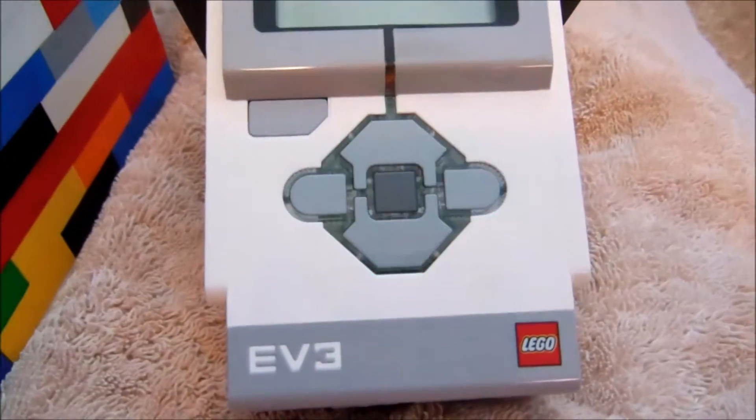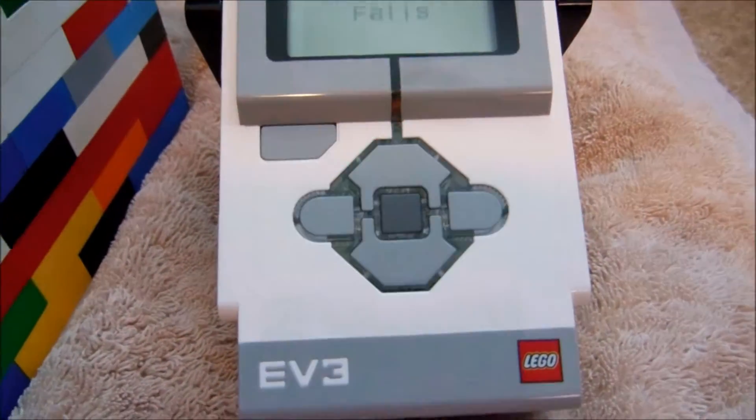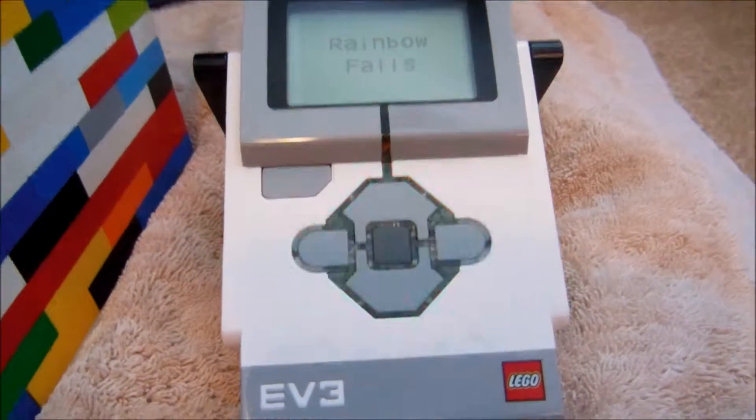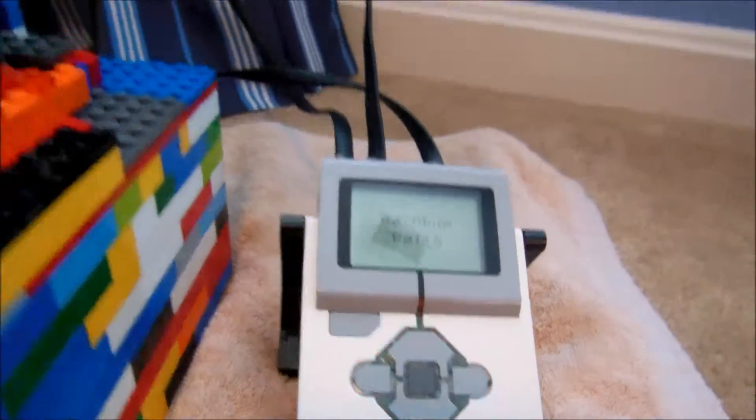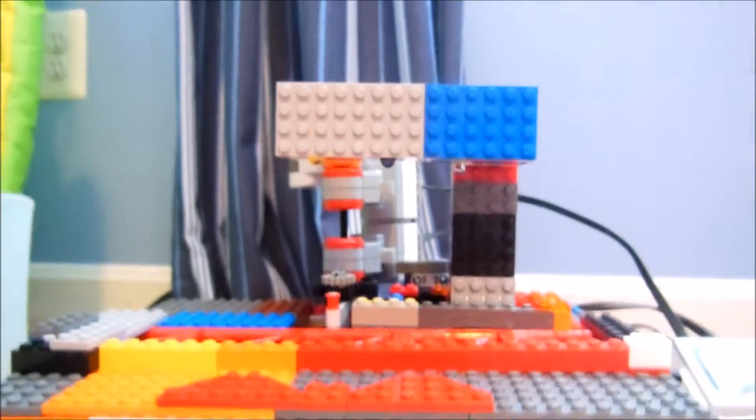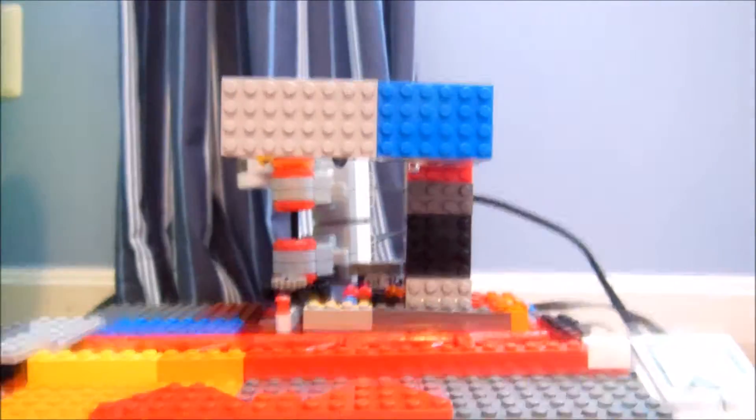It says Rainbow Falls on the screen and the red light is flashing. To turn it on, we will simply hit the center button and the light will turn green. Here's the falls itself. Let's get started.